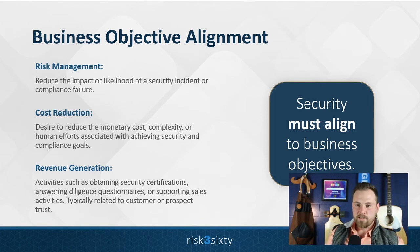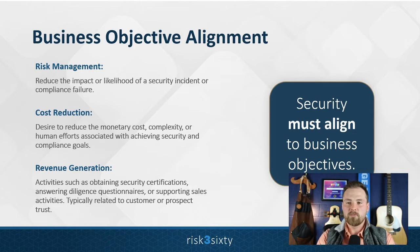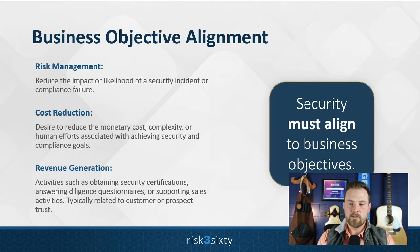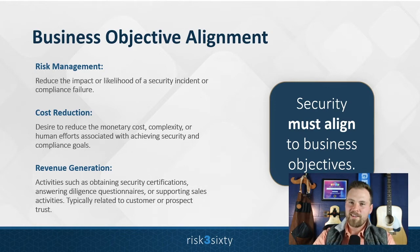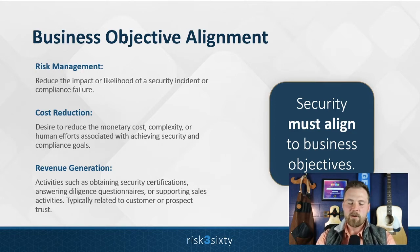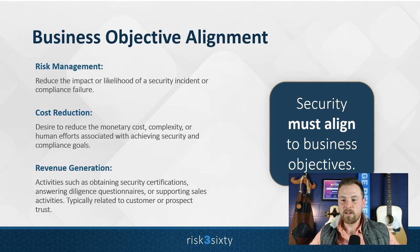At a high level, there are only three. One reason companies do this is to reduce risk — risk management. The second is they want to reduce complexity or reduce cost. And the third reason is revenue generation, meaning what you do in information security is directly correlated to the organization's ability to generate revenue and perform sales. Some of these might be extremely intuitive; others you might not immediately see the bridge to security. We'll dive into each now.